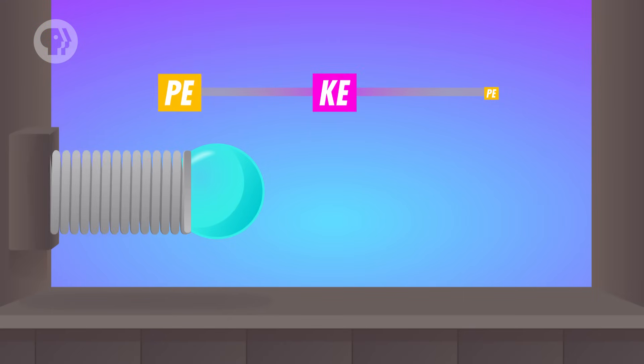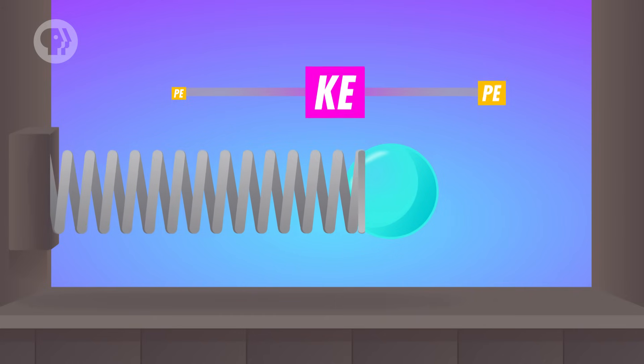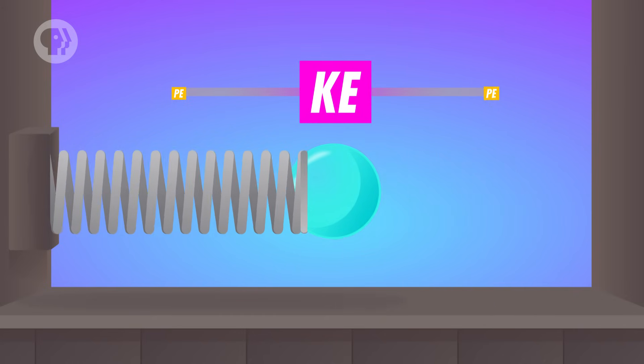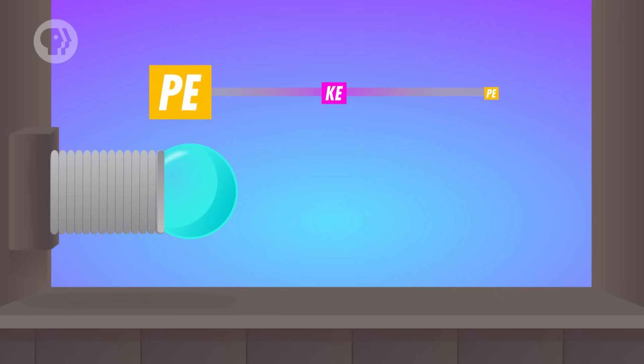Now, as the ball moves towards the middle, its kinetic energy starts to increase, because it's moving faster and faster. And at the same time, its potential energy decreases, keeping its total energy the same.